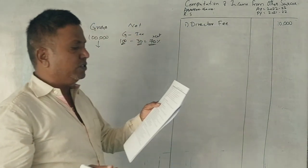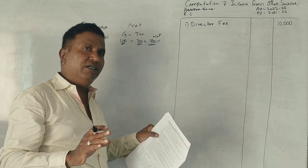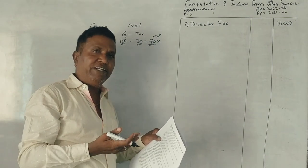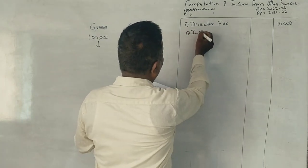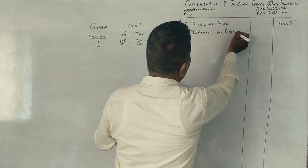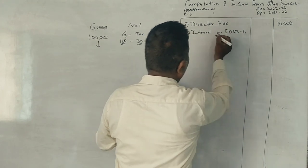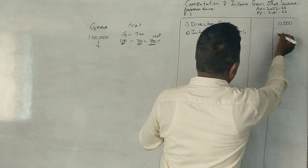Next. Interest on post office savings bank account, only 500 is there. I told you up to 3,500 is exempted. Here, how much we receive? Just 500. So, interest on post office savings bank account less than 3,500 is exempted.